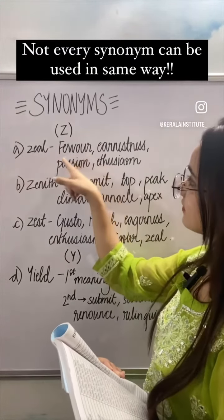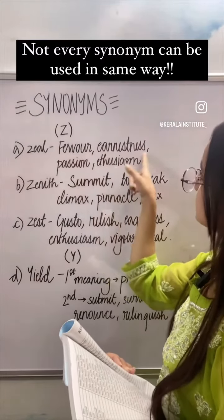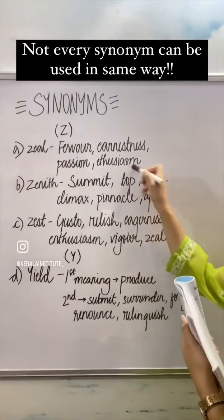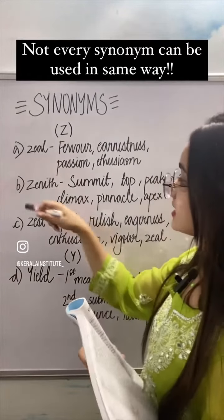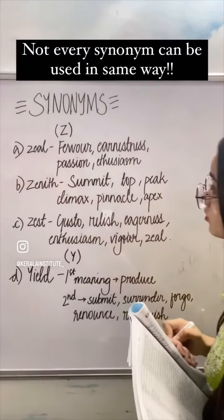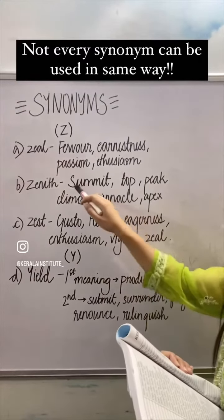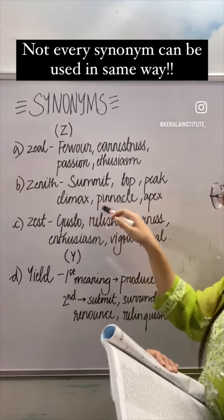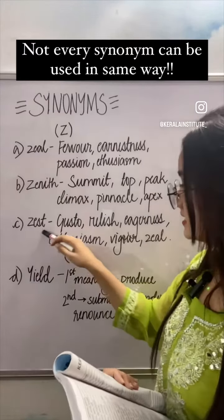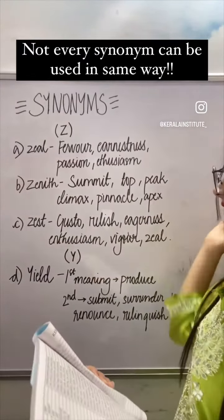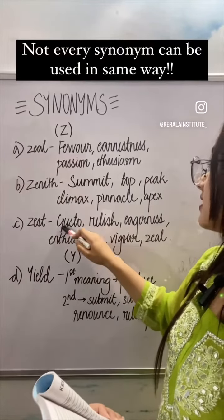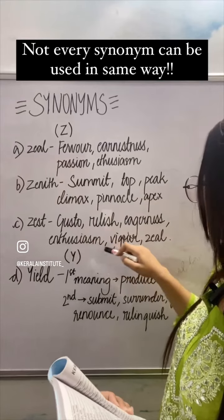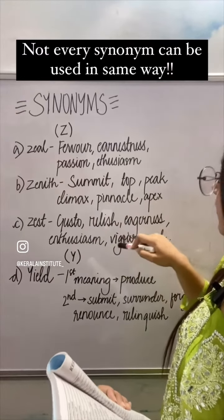Zeal also means earnestness, passion, and enthusiasm. The second word is zenith, which also means 'choti' — that means summit, top, peak, climax, pinnacle, and apex. Third is zest — zest means 'zika', which also means gusto, relish, eagerness, enthusiasm, zeal, and vigor.